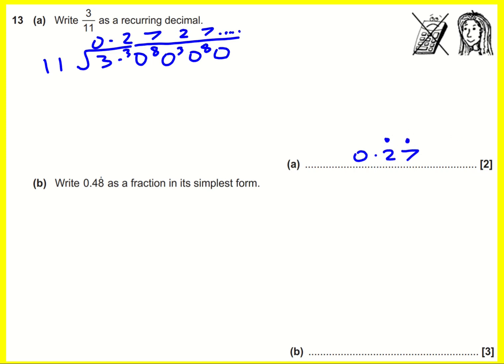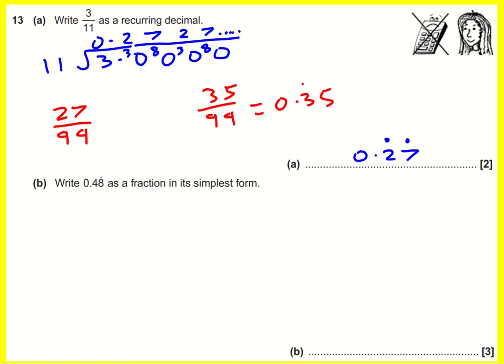Just for info, another way you could have done this is to write it over 99 by multiplying top and bottom by 9, to give 27 over 99 — that would also give you the answer. That always works: if I had 35 over 99, I would get 0.35 recurring. I haven't really proven that, but it is a fact. I'd say don't necessarily just rely on that — it's good to know, but make sure you can do short division regardless.